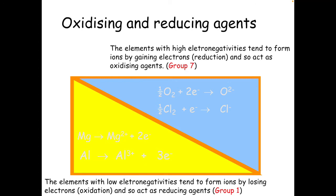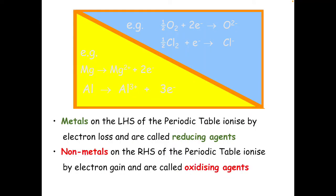Take note that Group 7 are really good oxidising agents and Group 1 are really good reducing agents. Non-metals tend to be oxidising agents and metals tend to be reducing agents. That's because metals become ions by losing electrons, so they're oxidised — making them reducing agents. Non-metals tend to gain electrons, so they're reduced — making them oxidising agents.